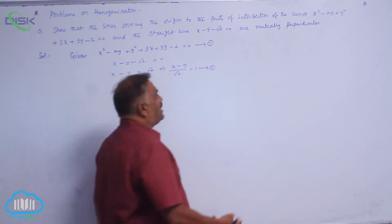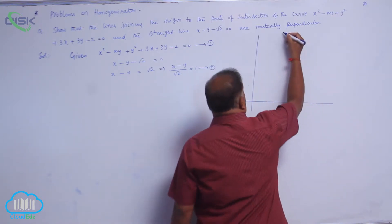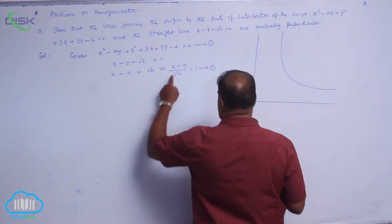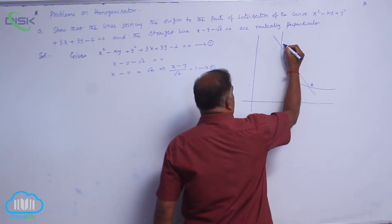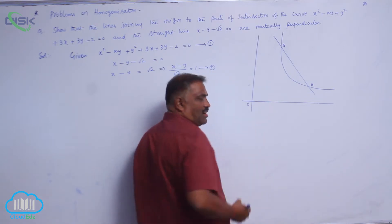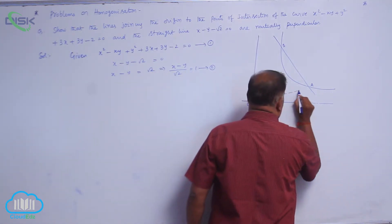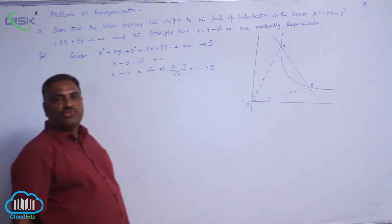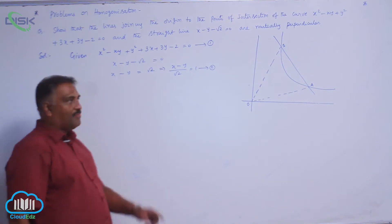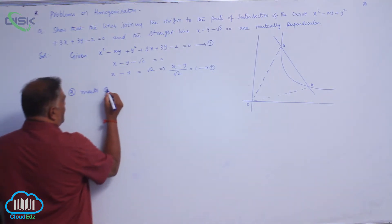Geometrically if you see, this is going to be the coordinate axis. The curve can be like this and straight line may meet the curve at two points A, B. This is the origin. Let us join these two OA and OB. OA and OB are pair of straight lines passing through the origin. You see 2 meets 1 at A, B.